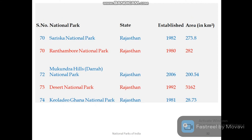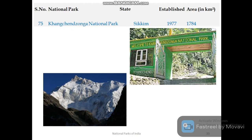Rajasthan has five national parks: Sariska, Ranthambore, Mukundra Hills, Desert National Park, and Keoladeo Ghana National Park. Keoladeo Ghana National Park is popular for its migratory birds and attracts bird lovers. Sariska and Ranthambore are important for their protected flora and fauna.